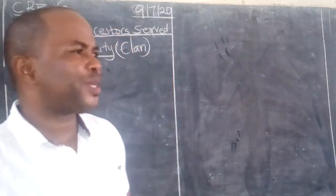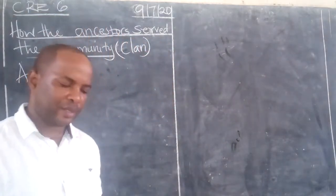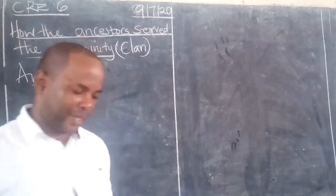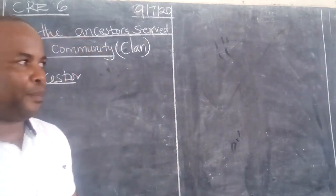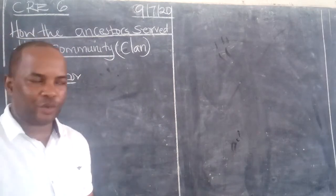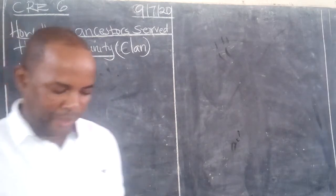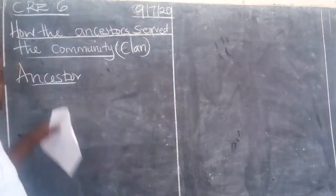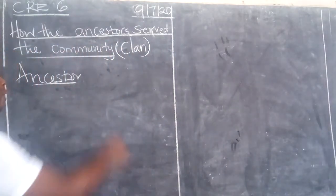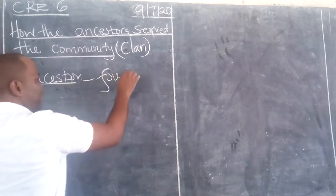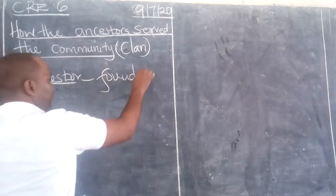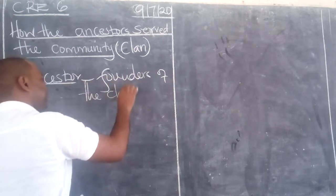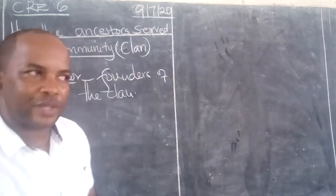The following are some of the roles that the ancestor played in African traditional society. I'll try to explain each point briefly. In traditional African society, the ancestors were the founders — we call them the founders of the clan.